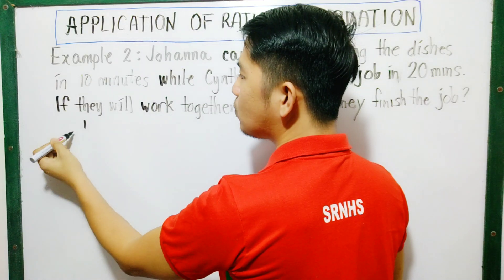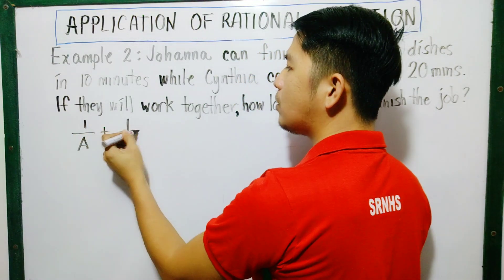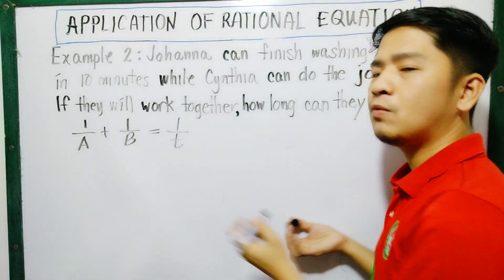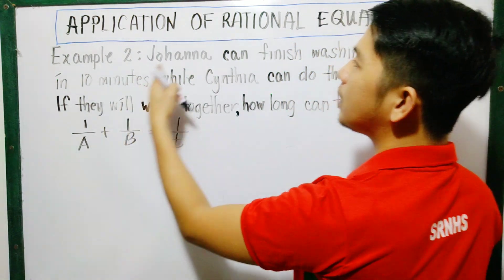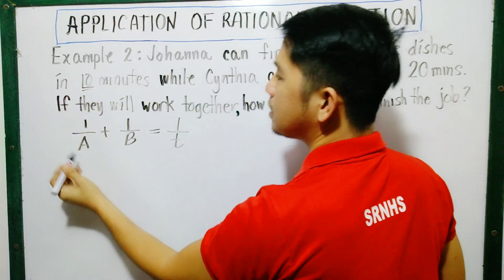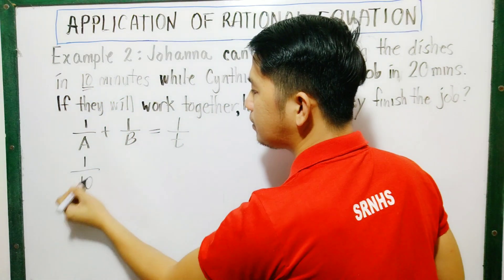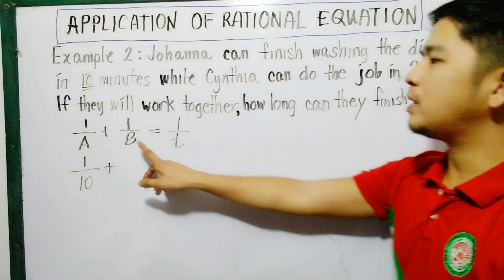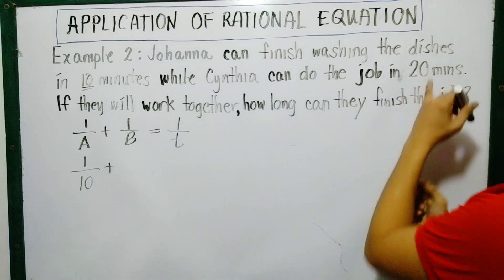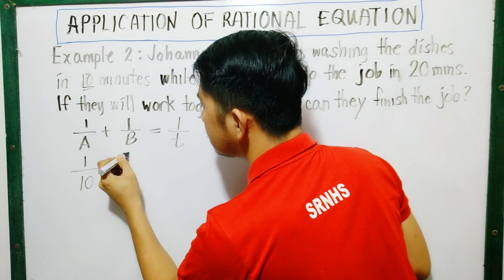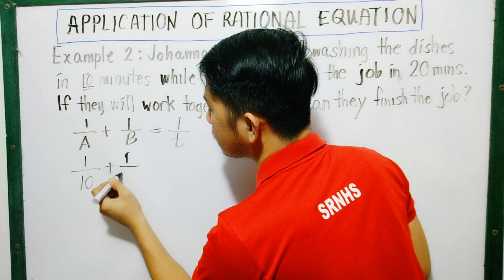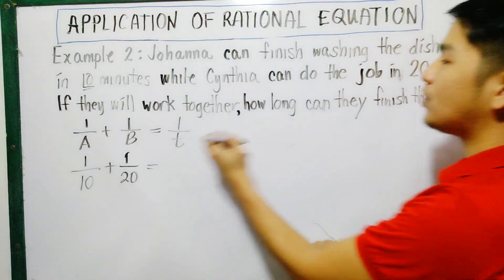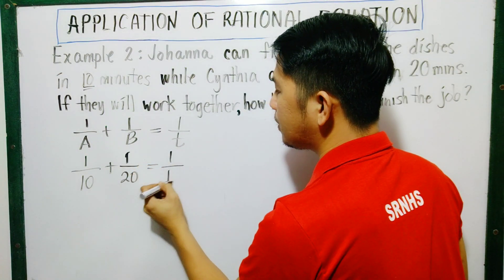The formula again is 1 over A plus 1 over B equals 1 over T. Where A represents Joanna's time, 10 minutes. So that is 1 over 10, plus 1 over B. B is for Cynthia, that is 20 minutes. So we have 1 over 20 equals - if they work together, that's the missing value - still 1 over T.